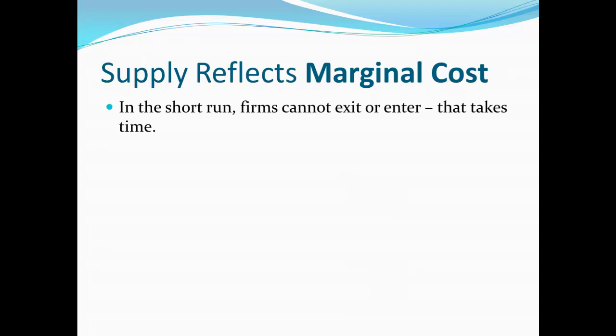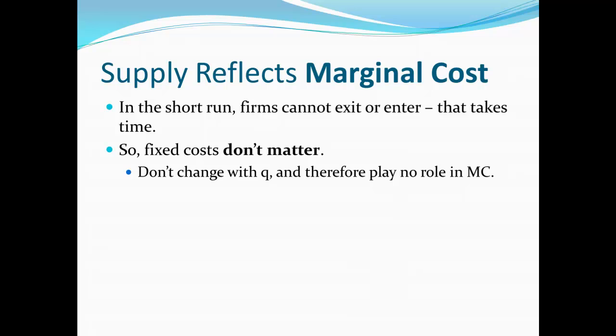In the short run, firms can't really exit or enter — it takes time to sell a factory or build a new one. Right now we're constrained by the choices we can make at the moment, those things we can change on very short notice. What that means is that fixed costs aren't really going to affect my decision in the short run, because I can't avoid them. There's nothing I can do that will either increase or decrease my fixed costs at this very moment. Over time I can change them, but I don't have enough time in the short run. Since fixed costs don't change with quantity — the thing I can change right now — they're not going to play any role in marginal cost, which means they won't have any impact on the quantity I decide to supply.